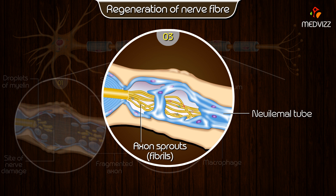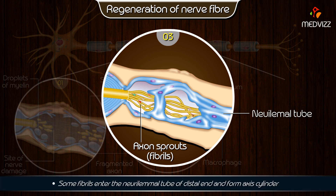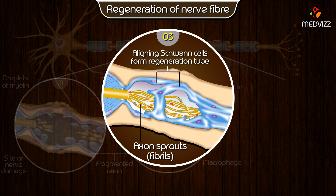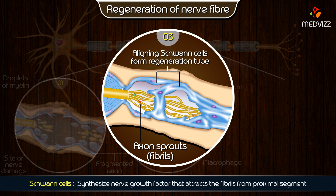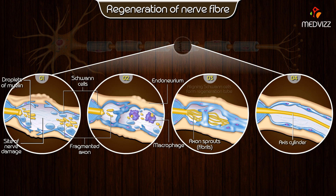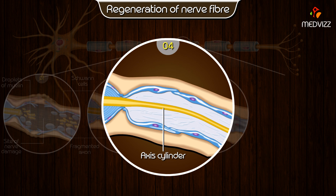Some of the fibrils enter the neurolemma tube of the distal end and form the axis cylinder. Schwann cells line up in the neurolemma tube and actually guide the fibrils into the tube. Schwann cells also synthesize nerve growth factors which attract the fibrils from the proximal segment.